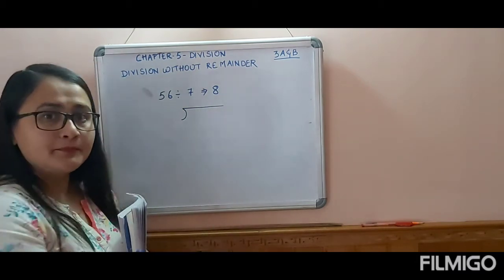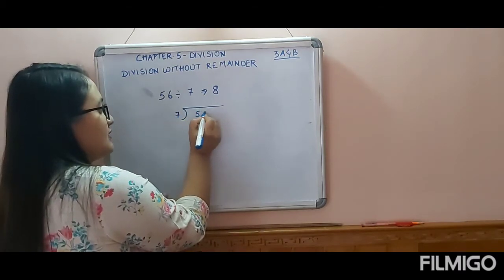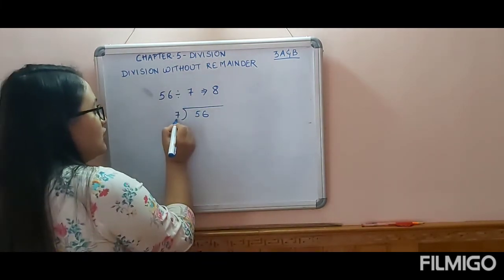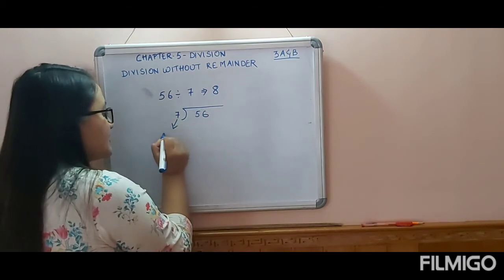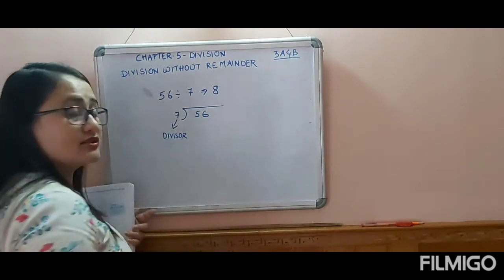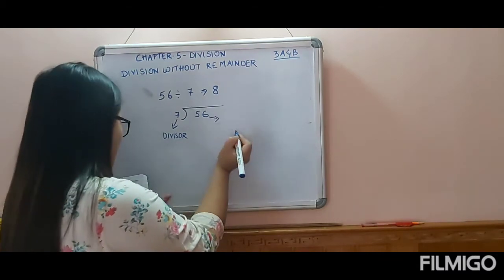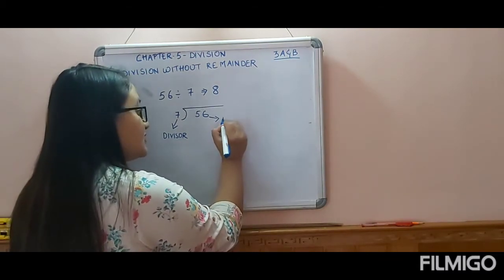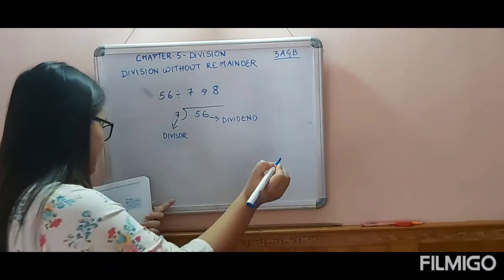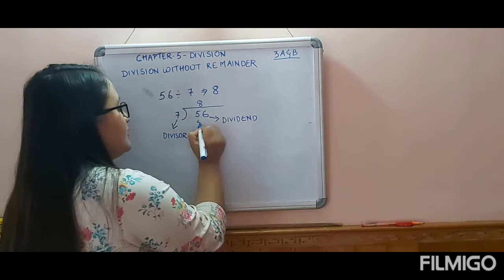Here we will write 7 and 56. So 7 is the number we write on the outside — it is your divisor, D-I-V-I-S-O-R. Then the number which you write inside, which is 56, is your dividend, D-I-V-I-D-E-N-D. And 7 eights are 56.